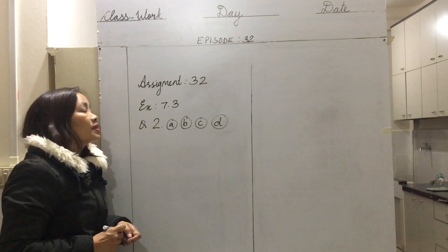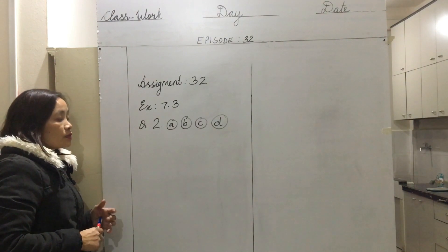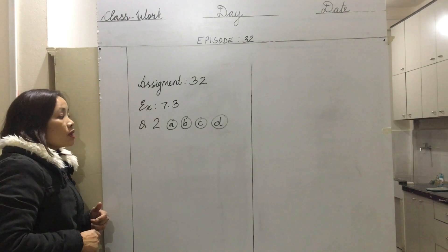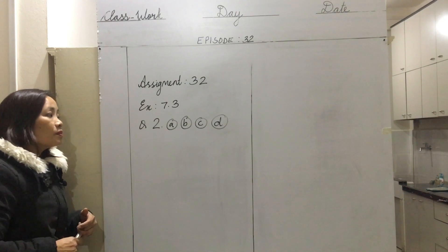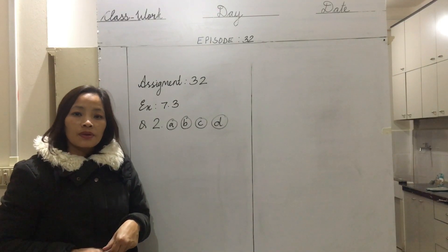For your assignment, number 32, exercise 7.3 from your Galaxy textbook, question number 2: a, b, c, and d. You need to submit this assignment. Thank you.